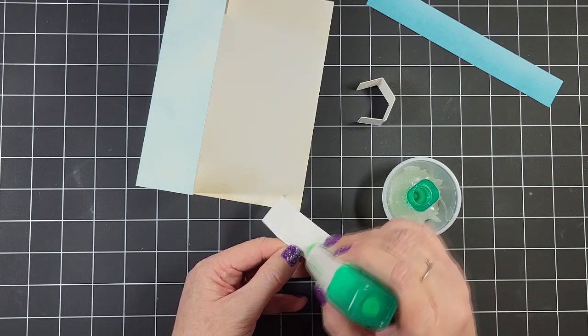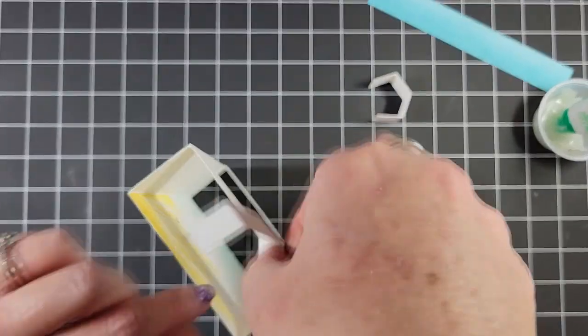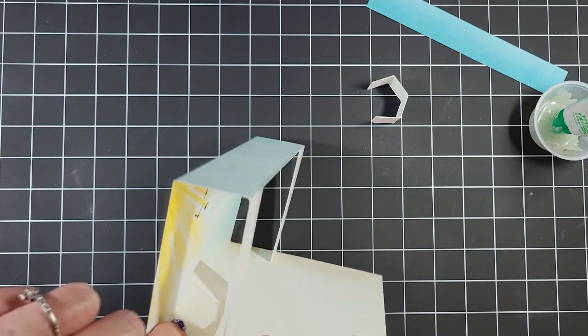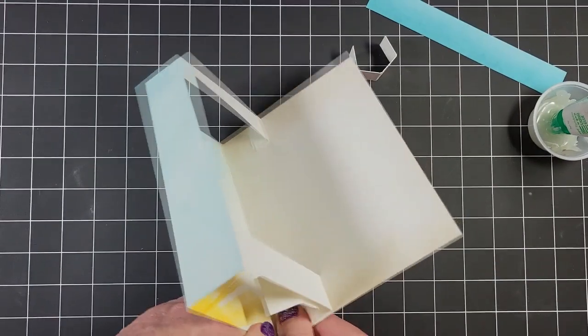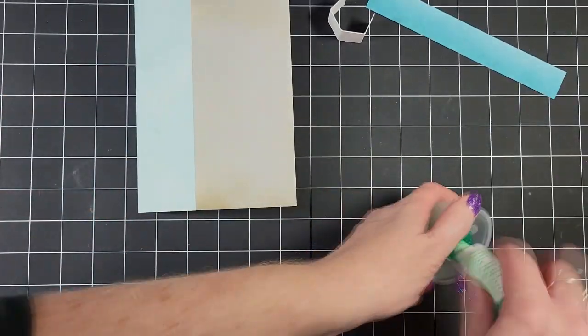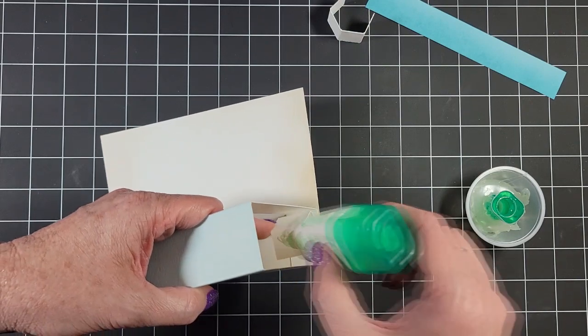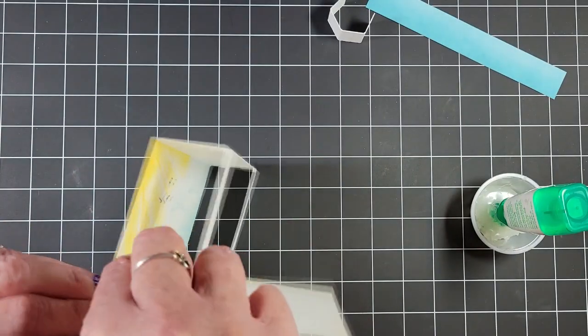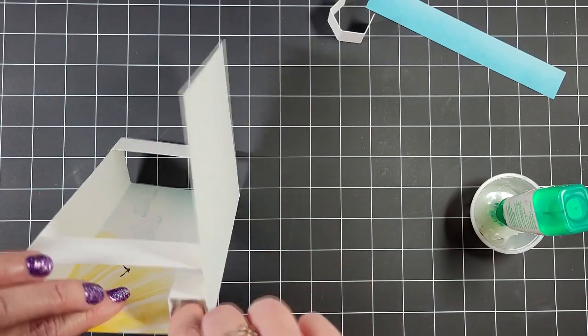So I'm just applying glue on that first section there. And I probably shouldn't have done this, but I was trying to show you how to attach this. It's much easier to attach these with your card sitting right on your desk with it open. But anyway, I'm getting this into position. So it's going to go on the bottom right up next to the wall there. And then I'm adding some more glue. And I'm going to attach it to the actual back, the background there.